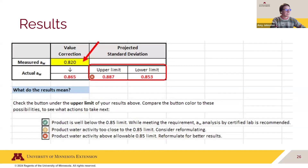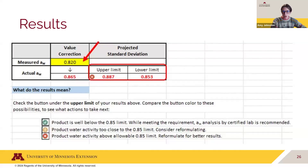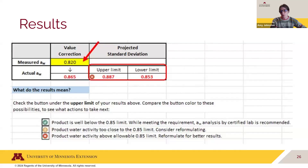For the last type of result, we tested another sample where the humidity reading was 82.0%, giving a measured water activity of 0.82. When we plug that into our calibrated Excel correction tool, the actual water activity is 0.865, with a range of 0.853 to 0.887. The entire range is above the 0.85 threshold, so recipe redevelopment is needed.